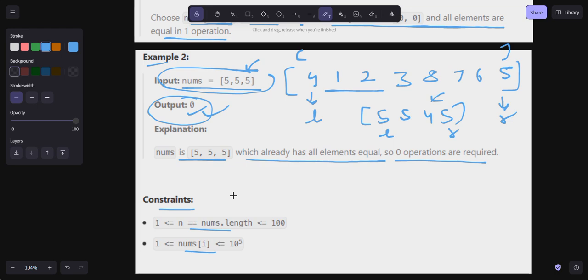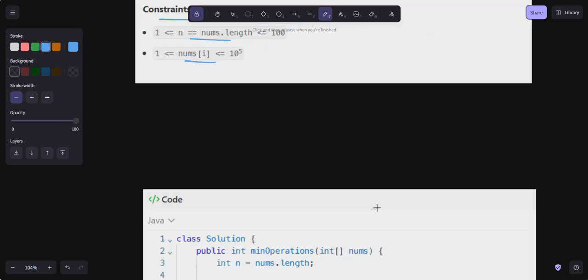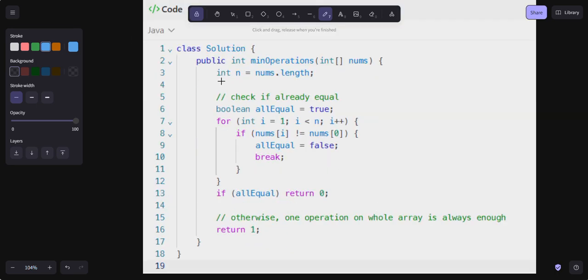Here n is nums.length and we're going to check if already equal. Boolean allEqual I'm going to set to true. I'm going to iterate over all the elements in nums.